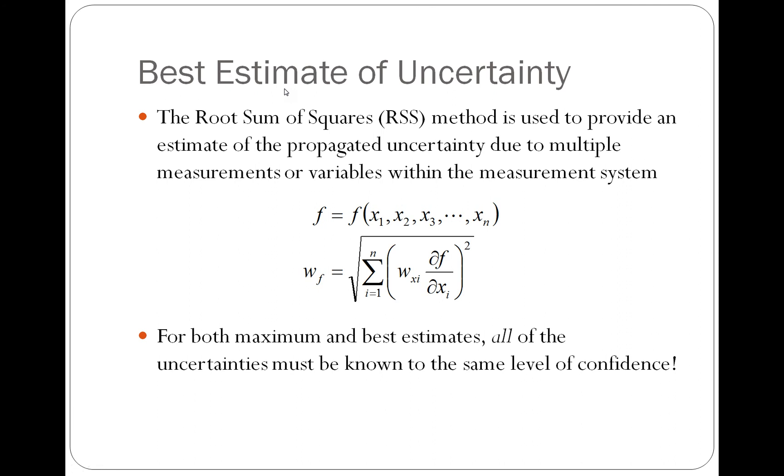We can also do what's called the best estimate of uncertainty, and this takes into account the fact that not all of our measurements are going to be as bad as they possibly could be. And this uses the root sum of squares method. Basically, we're going to do the same thing. We're going to take the function that describes the combination of all of the variables that were measured, and we have to take the partial derivative of that function with respect to all of the measurement variables. We're going to multiply that partial derivative for each of the variables by the uncertainty in the variable with which the derivative of the function was taken with respect to. And we have to add all of those. We're going to square that value, excuse me, and then add all of them up, and then finally take the square root of it. So this gives us the best estimate of uncertainty, assuming that this is a non-worst-case scenario, or this is the most likely uncertainty that's going to occur.